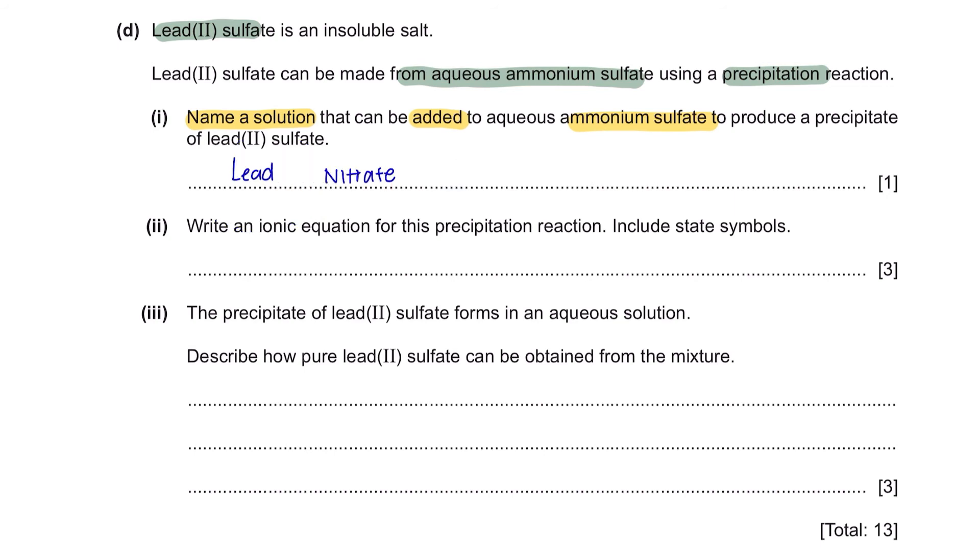Part 2. Write an ionic equation for this precipitation reaction. Include state symbols. The salt form is lead sulfate, meaning that the ions involved are lead 2+ and sulfate. The state symbols for ions are always aqueous and for the salt form is always solid.